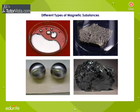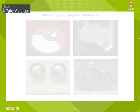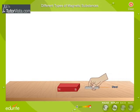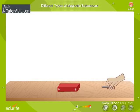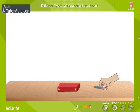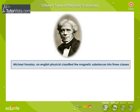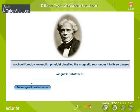Different types of magnetic substances. When we bring a piece of iron closer to a magnet, it gets attracted towards the magnet. Iron and steel are not the only substances which are attracted by a magnet or which can be magnetized. In fact, most of the materials are magnetic. Michael Faraday, an English physicist, classified the magnetic substances into three classes: diamagnetic substances, paramagnetic substances, and ferromagnetic substances.